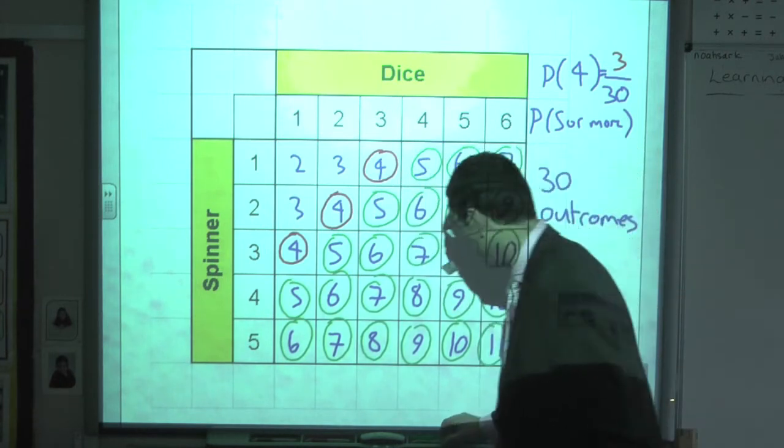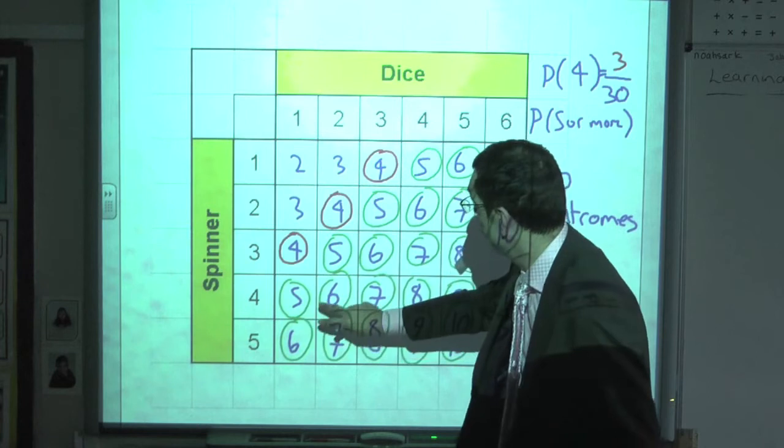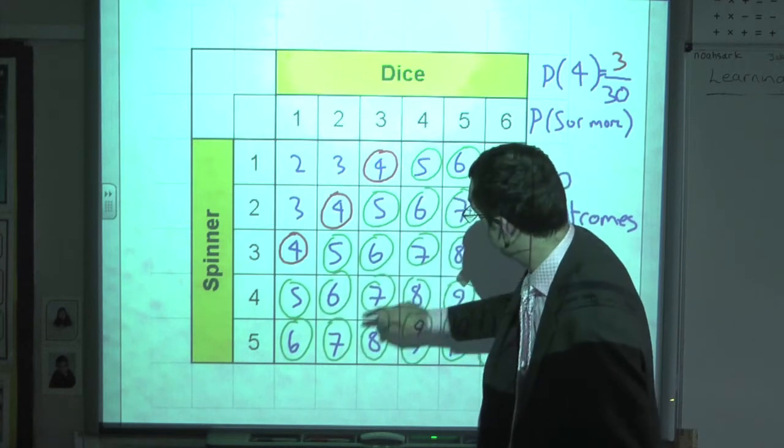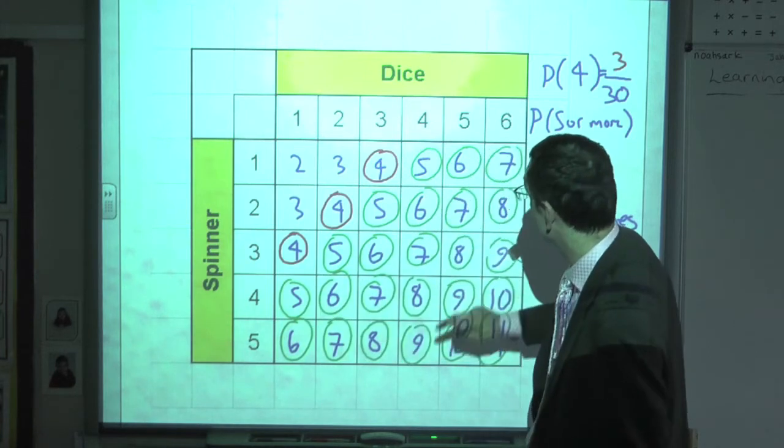Lots on there. So I'm going to add all these up. So I've got 2, 3, 4, 5, 6, 7, 8, 9, 10, 11, 12, 13, 14, 15, 16, 17, 18, 19.